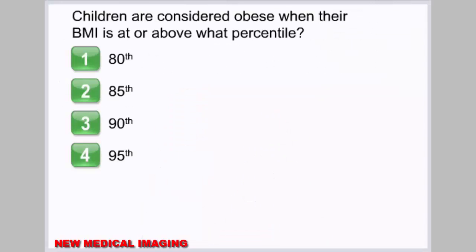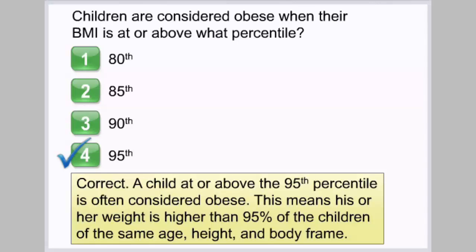Children are considered obese when their BMI is at or above what percentile? 1. 80th. 2. 85th. 3. 90th. 4. 95th. Correct. A child at or above the 95th percentile is often considered obese, meaning his or her weight is higher than 95% of children of the same age, height, and body frame.